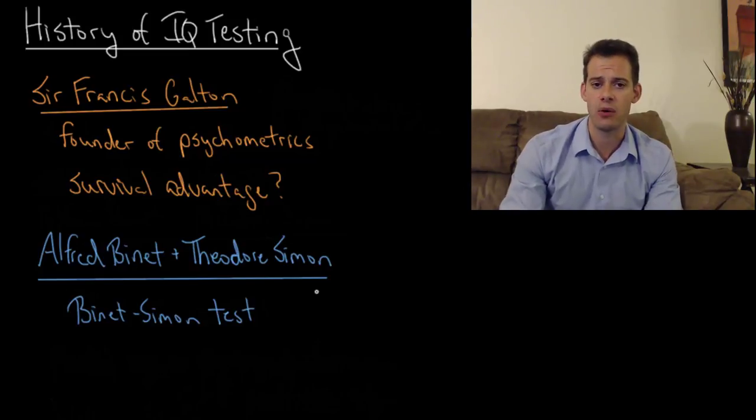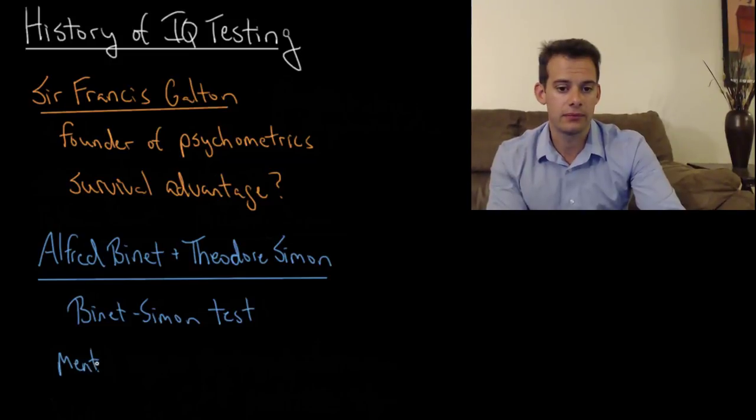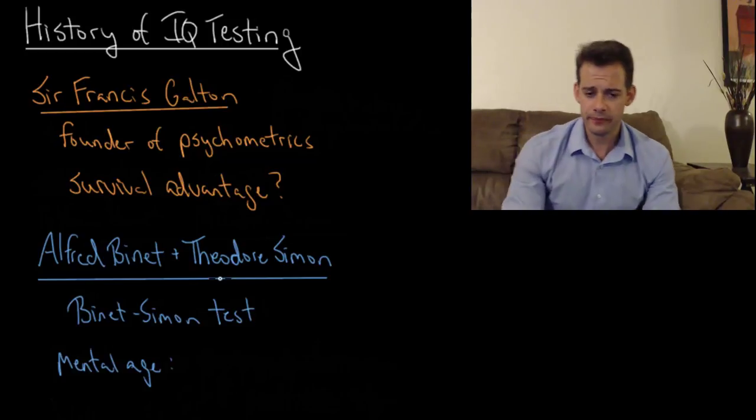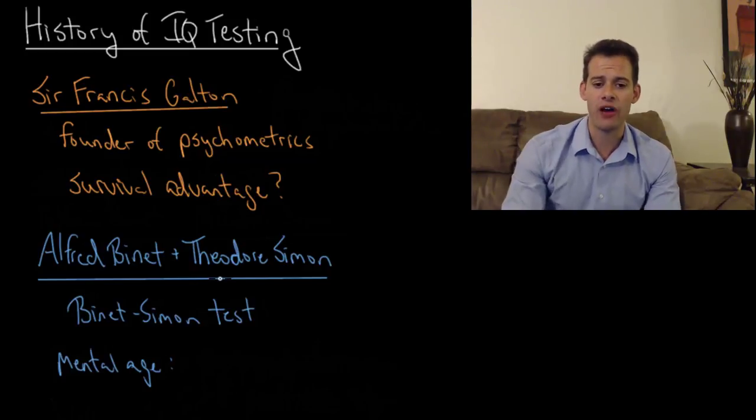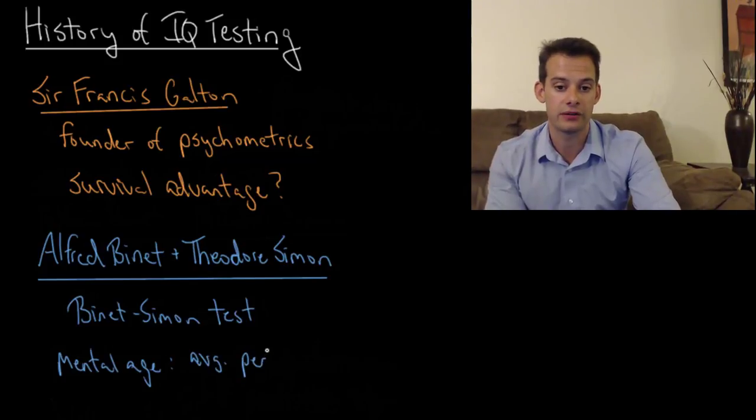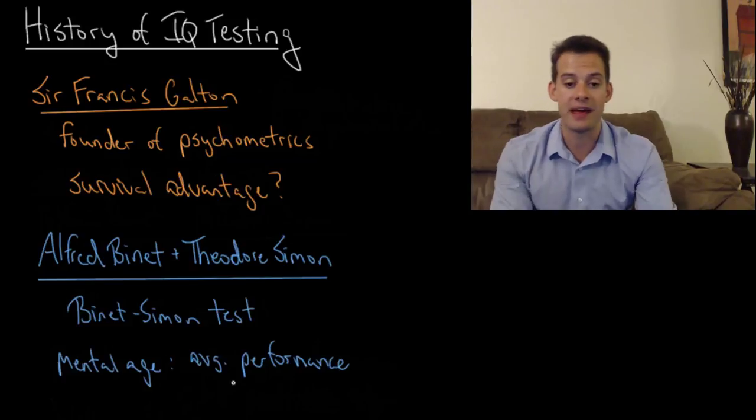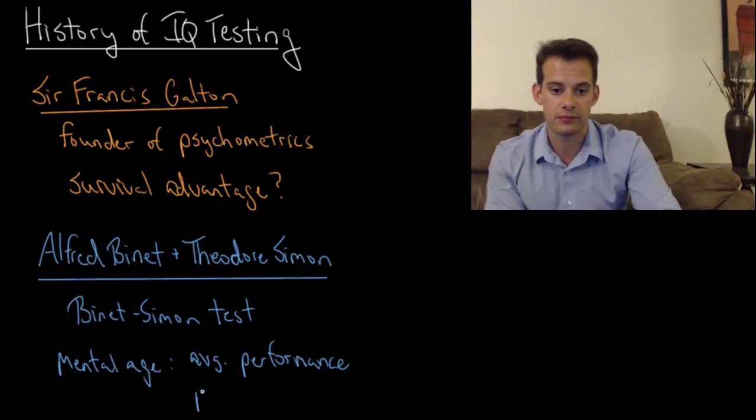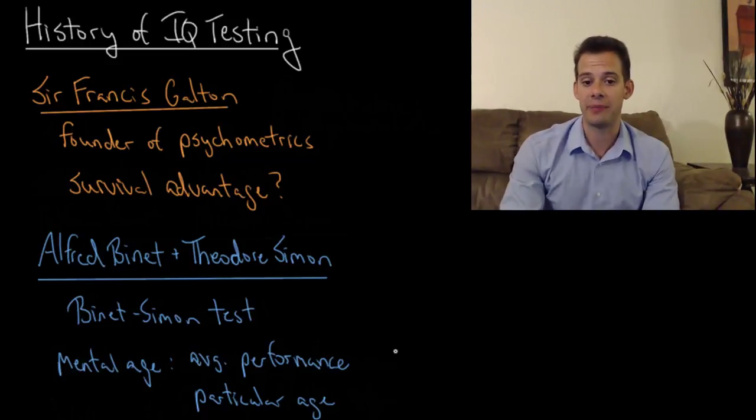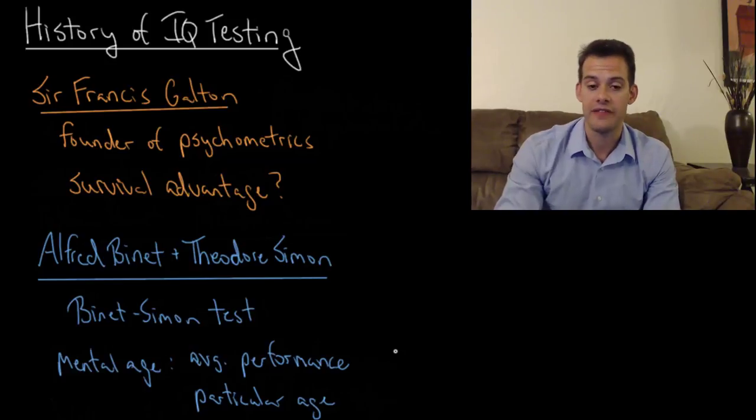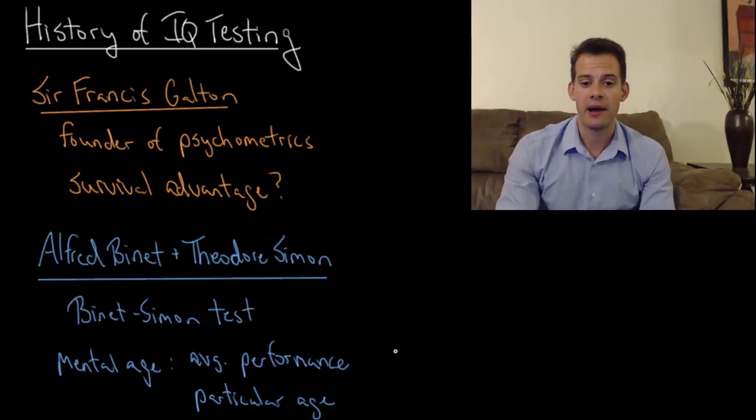Now an important concept that came out of this Binet-Simon Test was mental age. The idea of mental age was that it provided the average performance for students of a particular age. So when Binet and Simon gave this multifaceted examination to students of all different ages, they were able to calculate the mental age. So they said here's the average performance for a particular age. In other words, this is the performance that most six-year-olds showed on this assessment. And that could be referred to as a mental age of six. And this meant that students could now be judged by their mental age, not just their chronological age.